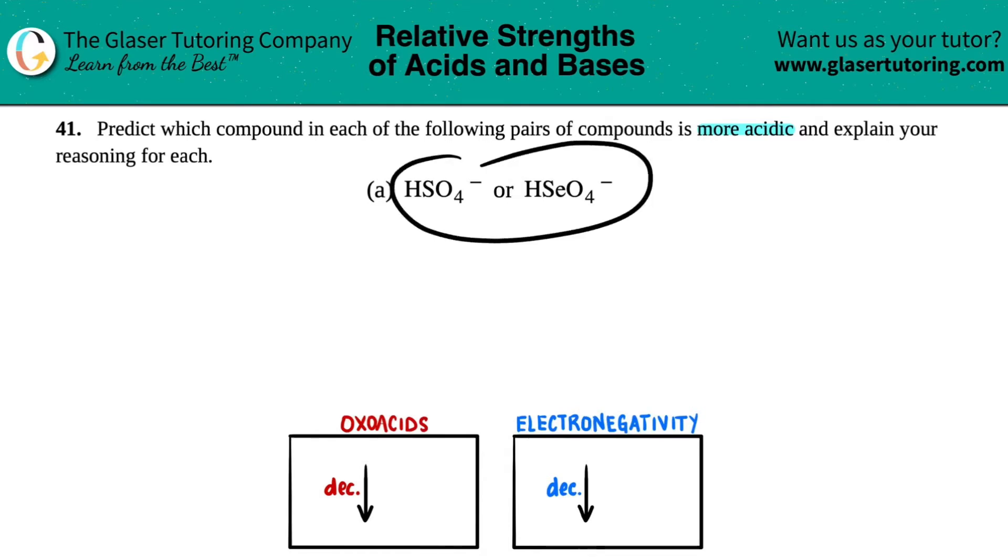There are basically two types: binary and oxo acids. Binary acids only have two different elements in the compound, but if I look at HSO4, I have hydrogen, sulfur, and oxygen—that's three, not two. Binary acids must have only two elements, and one has to be hydrogen, so binary acids are out.